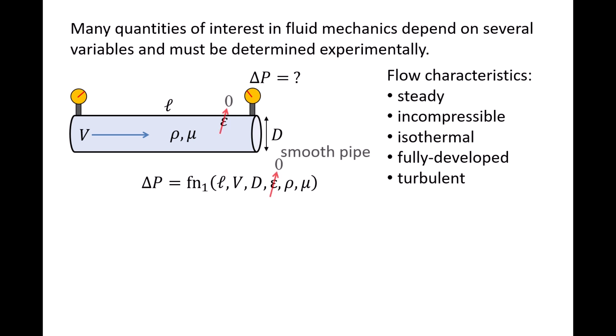To simplify the situation, let's restrict ourselves to smooth-walled pipes where the absolute roughness is zero. This eliminates epsilon as a variable, and now we can get a relationship between the dependent variable delta p and the remaining independent variables through experiments.